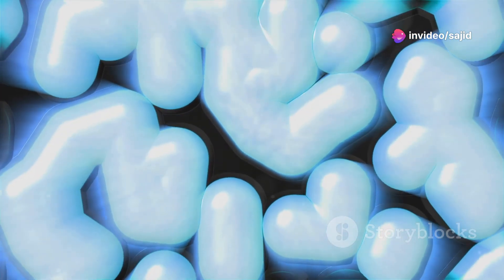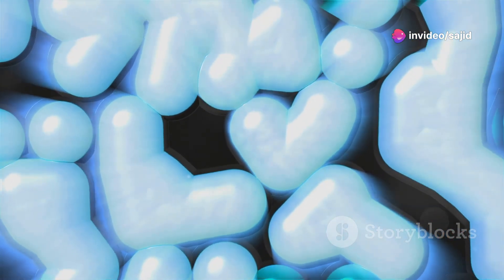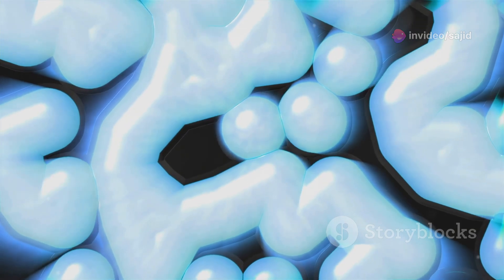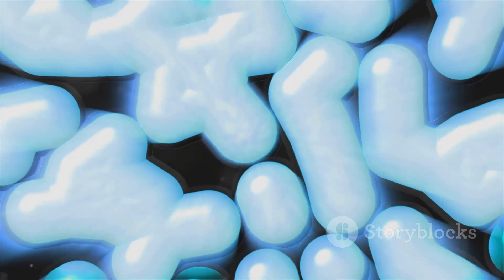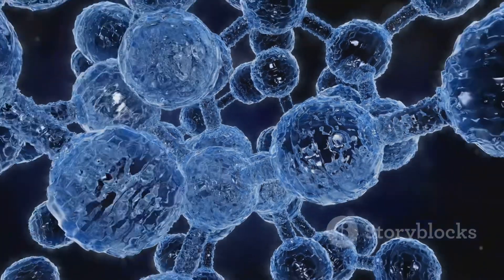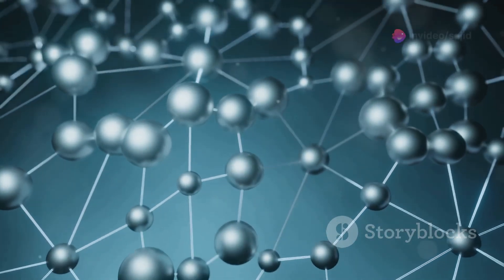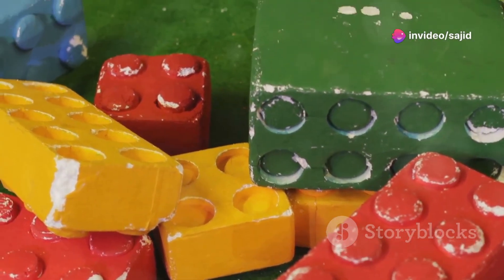This little guy is the smallest identifiable unit into which a pure substance can be divided and still retain its composition and chemical properties. Now what exactly is a molecule? It's a group of two or more atoms bonded together. Think of them as the Lego blocks of chemistry.